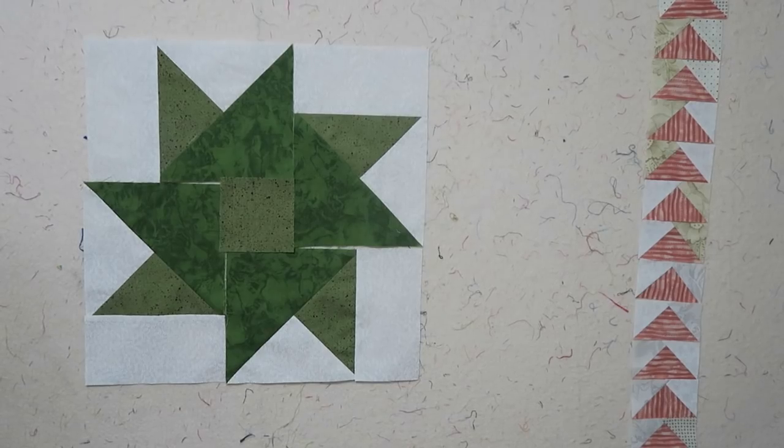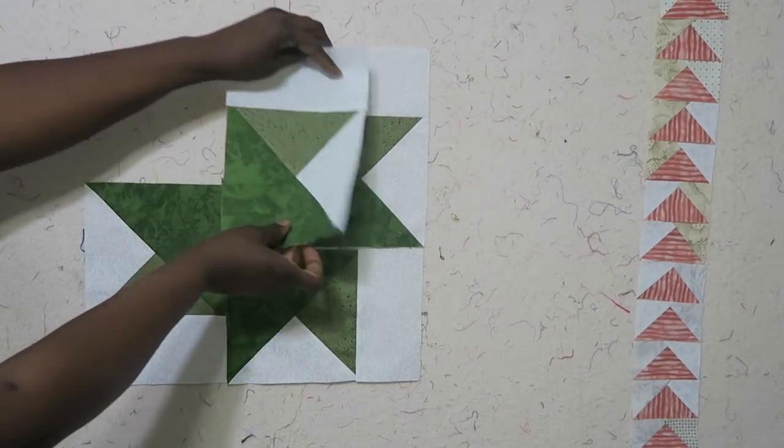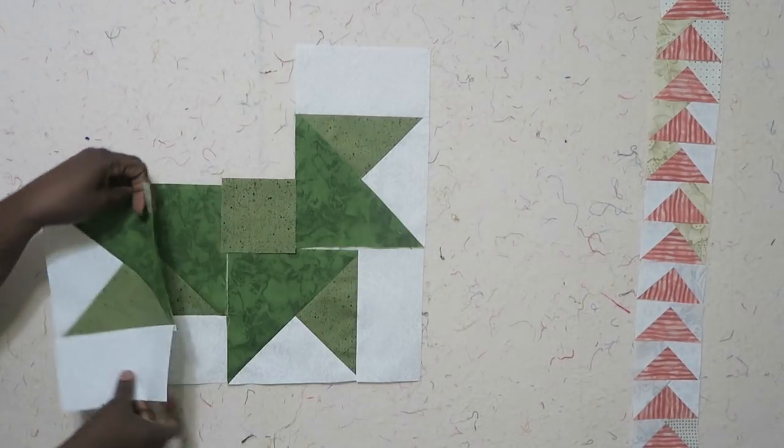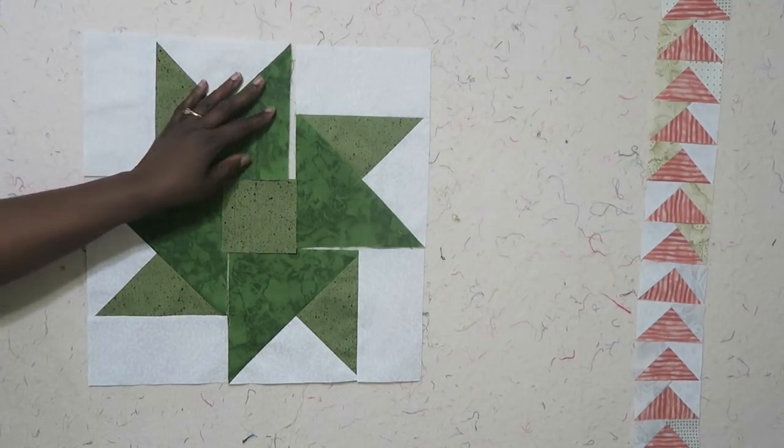So now I have my block laid out and all I did was just took this unit and turned it one quarter turn all the way around the quilt top. Now the tricky part comes in how to sew this block together.